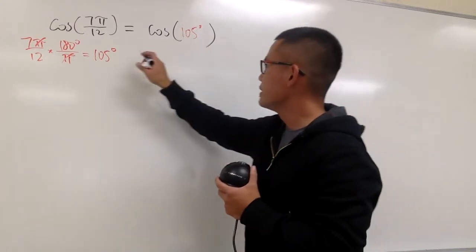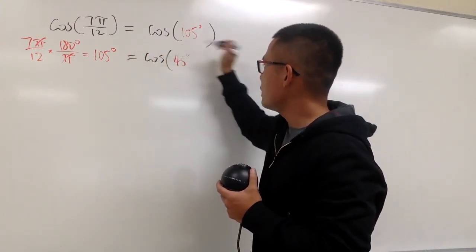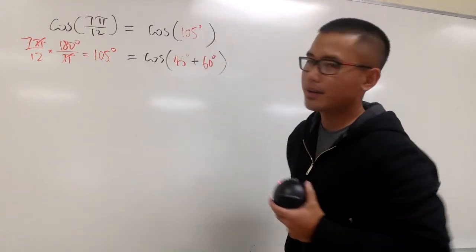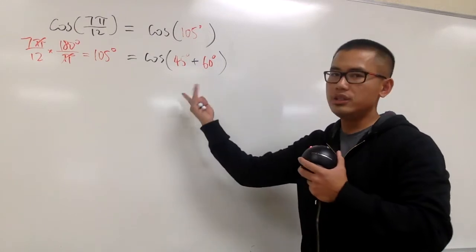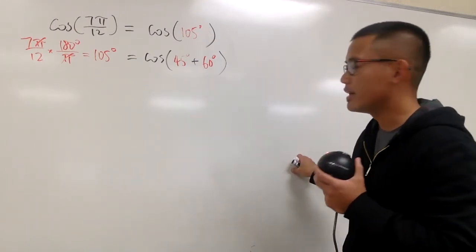In other words, I can break this down as cosine, and let's put on the 45 degrees first, and then plus 60 degrees. All right? And of course, if you switch the order, it doesn't matter. This is what we have at the moment.